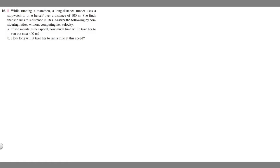In this problem, we're told while running a marathon, a long-distance runner uses a stopwatch to time herself over a distance of 100 meters. She finds that she runs this distance in 18 seconds. Answer the following by considering ratios, without computing her velocity. If she maintains her speed, how much time will it take her to run the next 400 meters, and how long will it take her to run a mile at this speed?